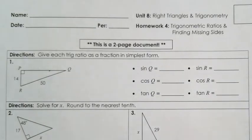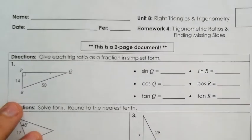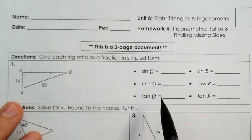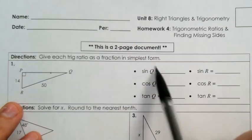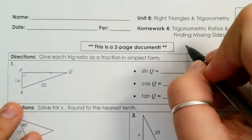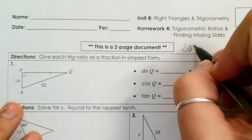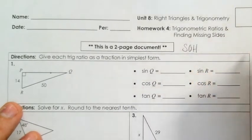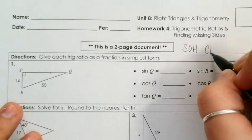The lesson today we talked about how we write a ratio based on the angle that we are observing. We want to remember we have our acronym SOHCAHTOA.